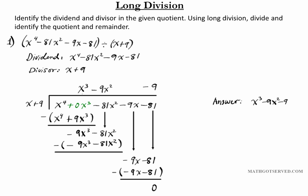The quotient is what you have on top: x cubed minus 9x squared minus 9. The remainder is the value left over at the bottom — our remainder is equal to zero. A remainder of zero tells us that the divisor x plus 9 is a factor of the dividend. That's how you carry out the long division algorithm.